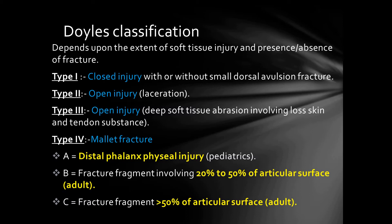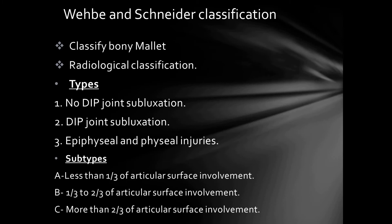Doyle classifies mallet finger based on extent of soft tissue injury and presence or absence of fracture, with four types. Type 1 is a closed injury with or without small dorsal avulsion fracture. Type 2 is open injury without loss of skin and tendon substance. Type 3 is open injury with loss of skin and tendon substance. Type 4 is mallet fracture: 4A is distal phalanx physeal injury in pediatrics, 4B is fracture fragment involving 20–50% of articular surface, and 4C involves more than 50%.